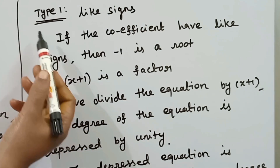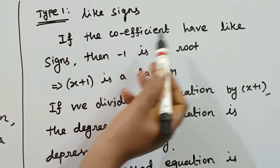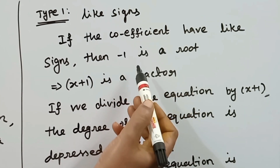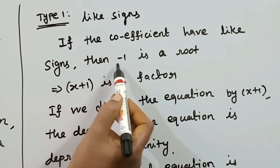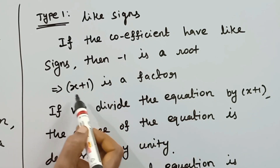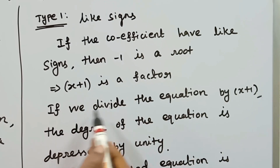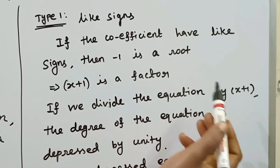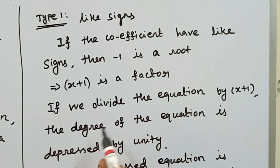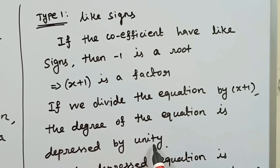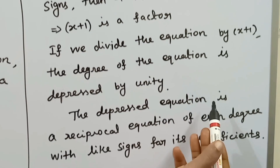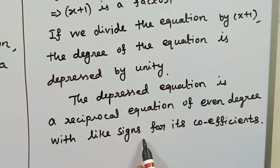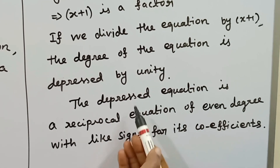Type 1 is like sign. For an odd degree reciprocal equation with like signs, if the coefficients have like signs, then minus 1 is the root. So x plus 1 is a factor. If we divide the given reciprocal equation by x plus 1, the degree of the equation is depressed by unity.